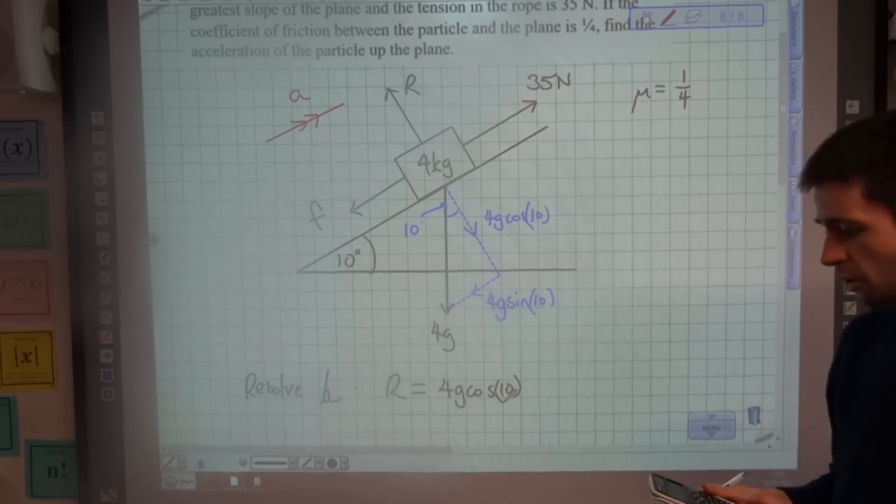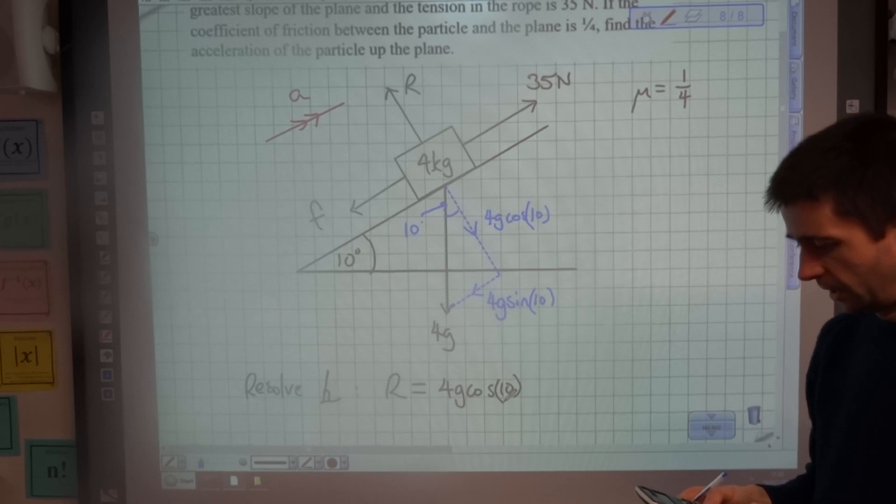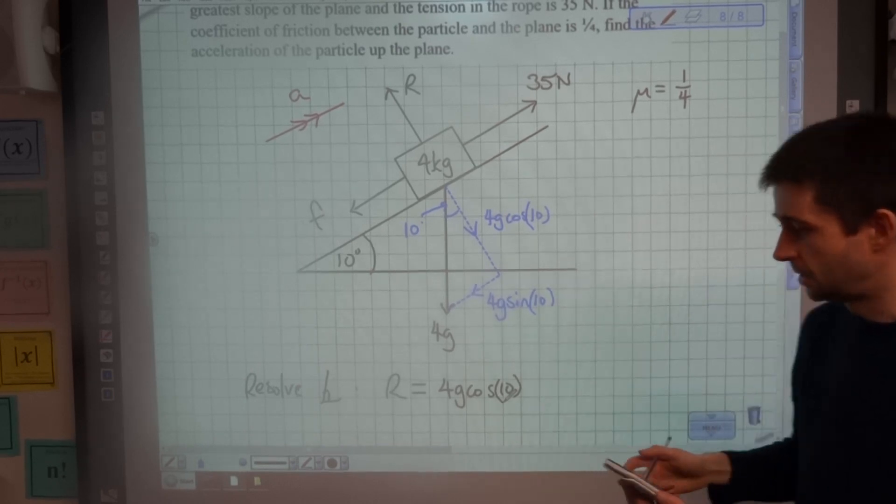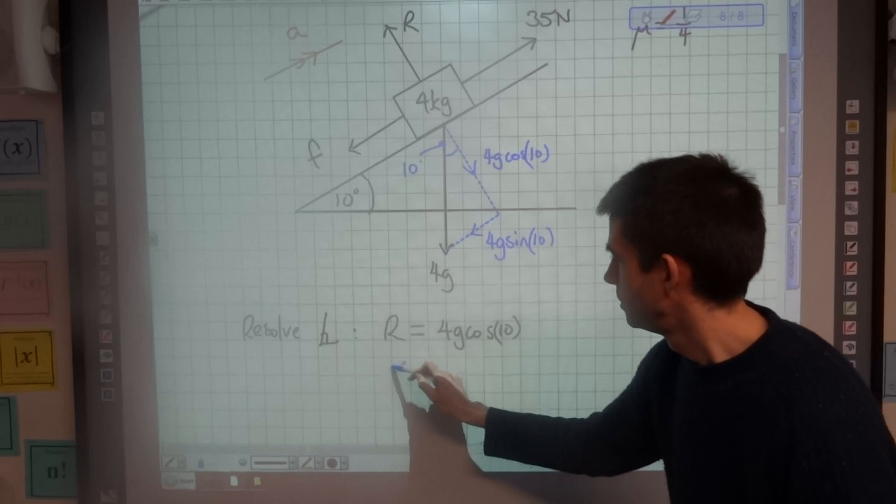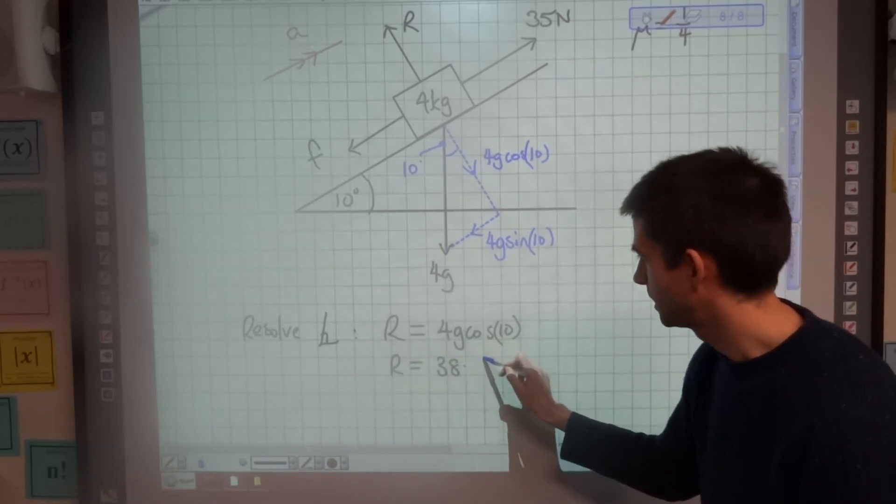So I can get a numerical value for R now, remembering that in maths we use G is 9.8. So my value for R, my reaction, is 38.6.